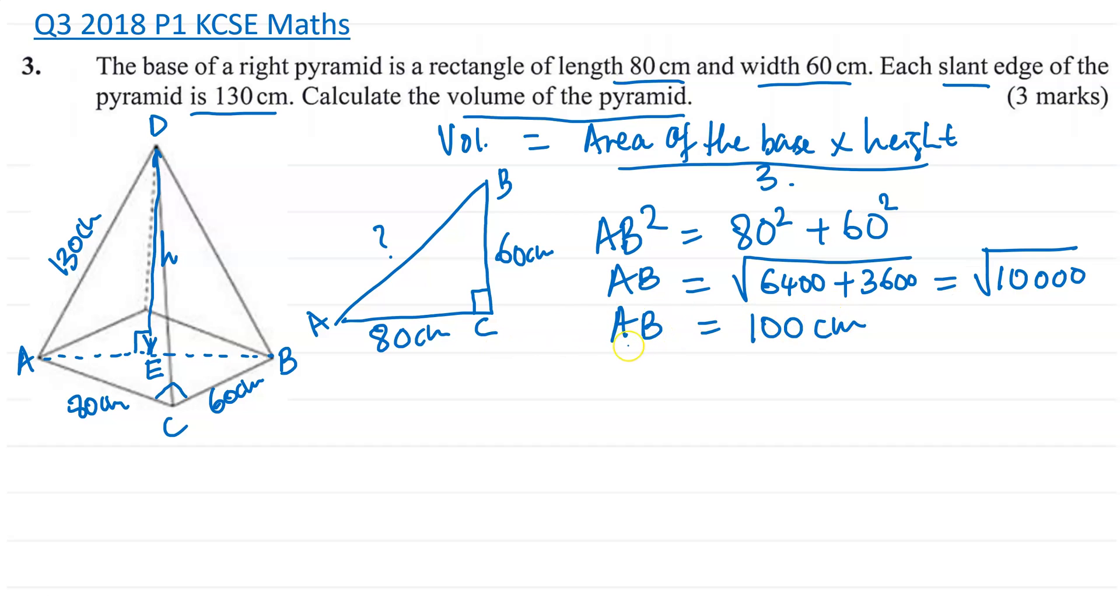So now I have AB, I can get AE. So I can say here, therefore AE is equal to 50 centimeters. So let's go ahead and put that in. This is 50 centimeters.